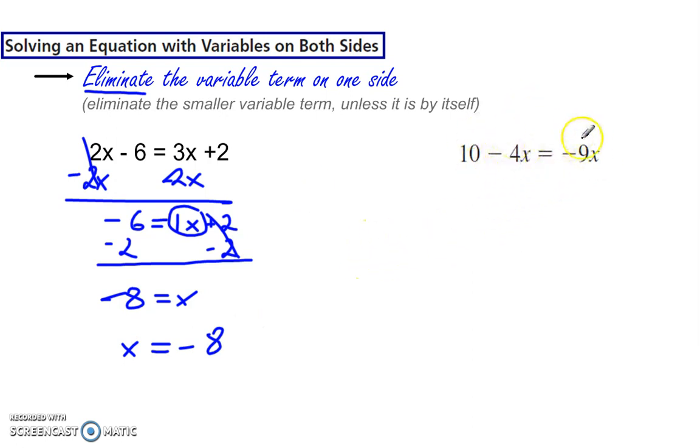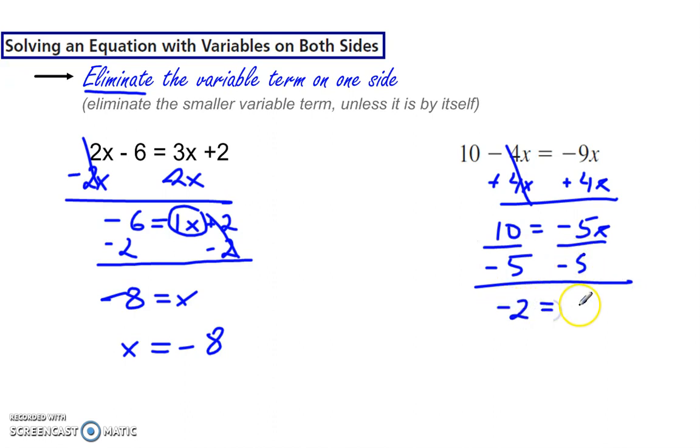Over here, eliminate one of these. Now notice that the x term is already by itself over here. Even though this is the smaller one, I'm going to eliminate the 4x because the x term is already by itself. So plus 4x and that gives me 10 is equal to negative 5x. Now I need to divide by negative 5. Divide by negative 5 on each side and that gives me x is negative 2.